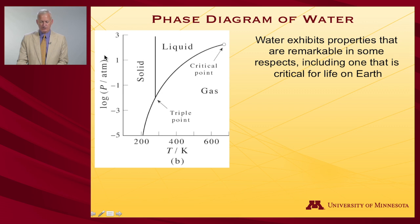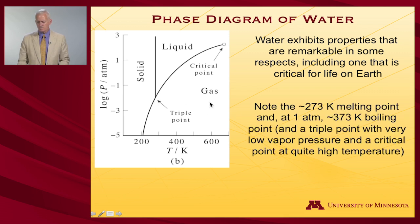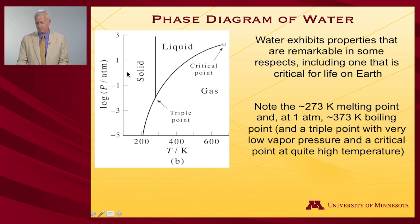We still have log of the pressure on the ordinate and temperature on the abscissa. There's a triple point: solid, liquid, gas. We know a lot of things about water from our experience — namely the melting point is 273 Kelvin at one atmosphere. On the log scale, one atmosphere would be zero, since log of one is zero. Running over at one atmosphere, we hit the solid-liquid boundary — the melting point — at about 273 Kelvin.